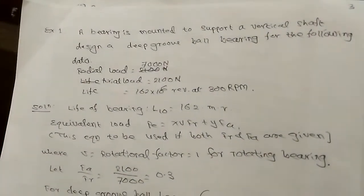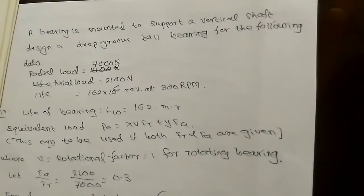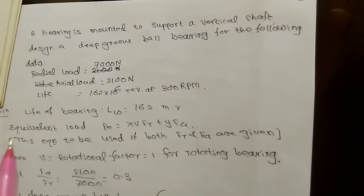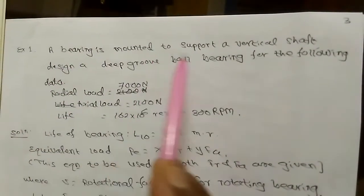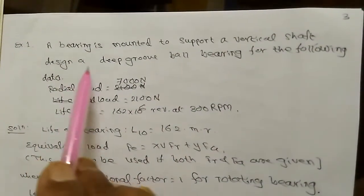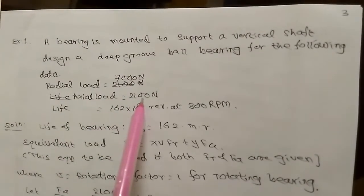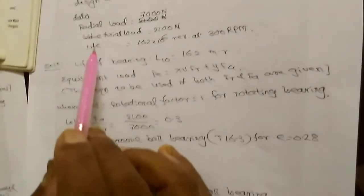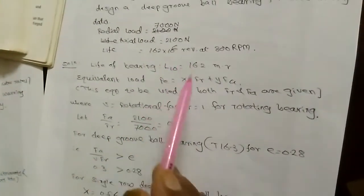Let us look at Example 1. Design a deep groove ball bearing for the following data: radial load = 7000 N, axial load = 2100 N, life = 162 × 10^6 revolutions at 300 RPM. In the solution, life L10 = 162 million revolutions. Since there is both axial and radial load, we calculate the equivalent load using PE = X·V·FR + Y·FA.